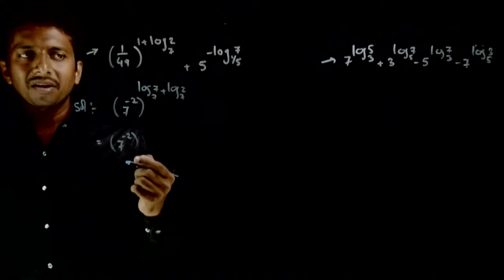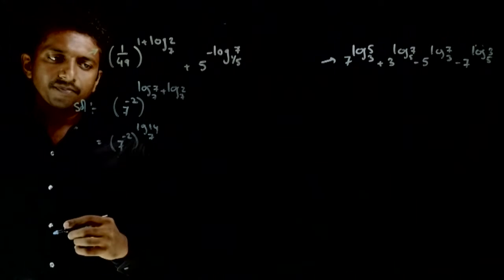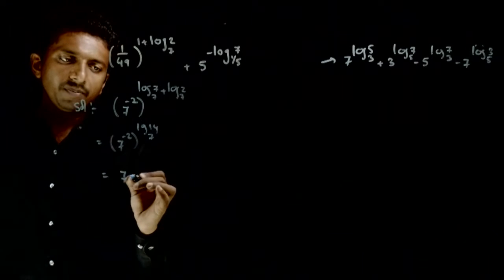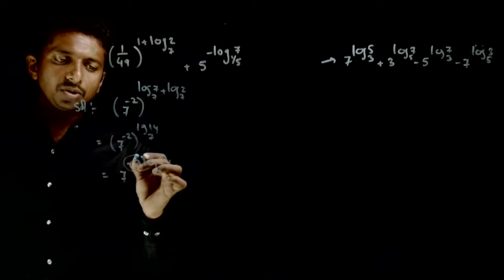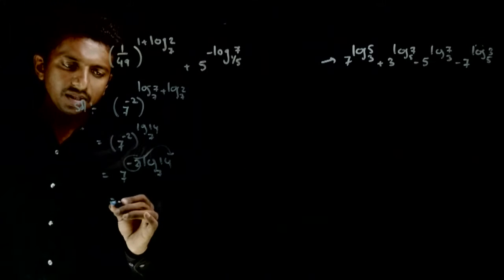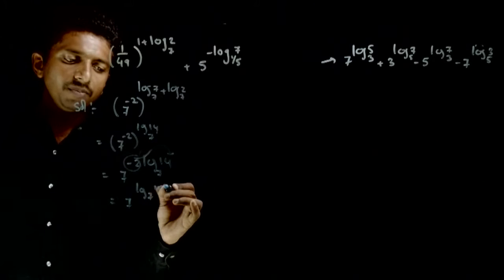Log a plus log b is log a into b. So log 14 to the base 7 ho jai. That is equal to 7 power minus 2 log 14 to the base 7. Ewa the minus 2 jai. This will go to the power. That is equal to 7 power log to the base 7, 14 power minus 2.